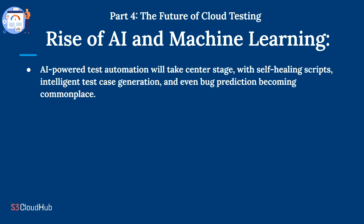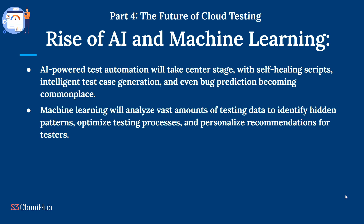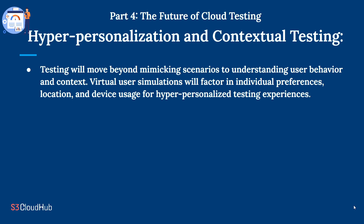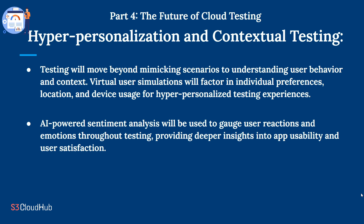Machine learning will analyze vast amounts of testing data to identify hidden patterns, optimize testing processes, and personalize recommendations for testers. Hyper-personalization and contextual testing: testing will move beyond mimicking scenarios to understanding user behavior and context. Virtual user simulations will factor in individual preferences, location, and device usage for hyper-personalized testing experiences. AI-powered sentiment analysis will gauge user reactions and emotions throughout testing, providing deeper insights into app usability and user satisfaction.